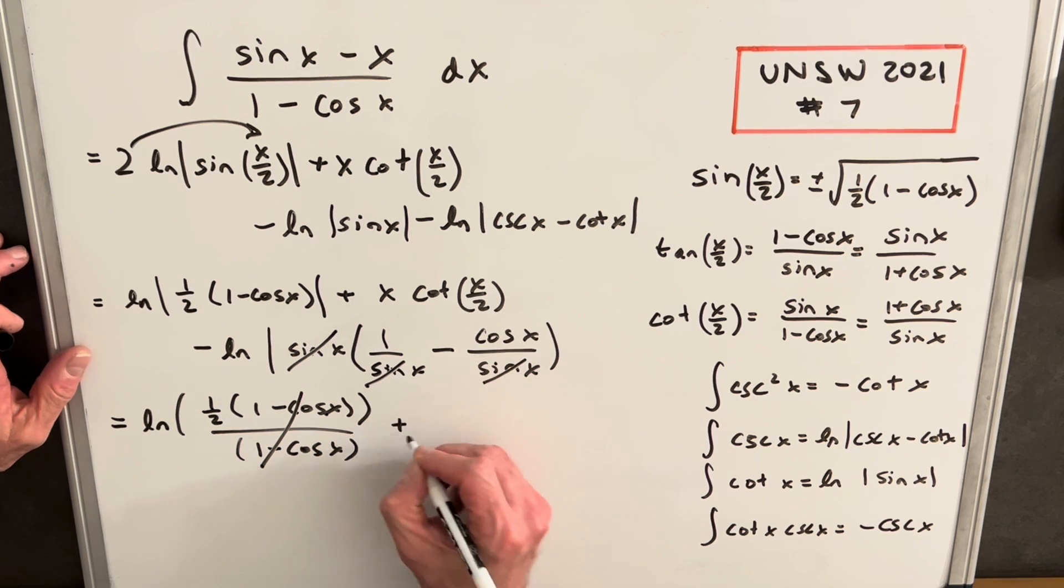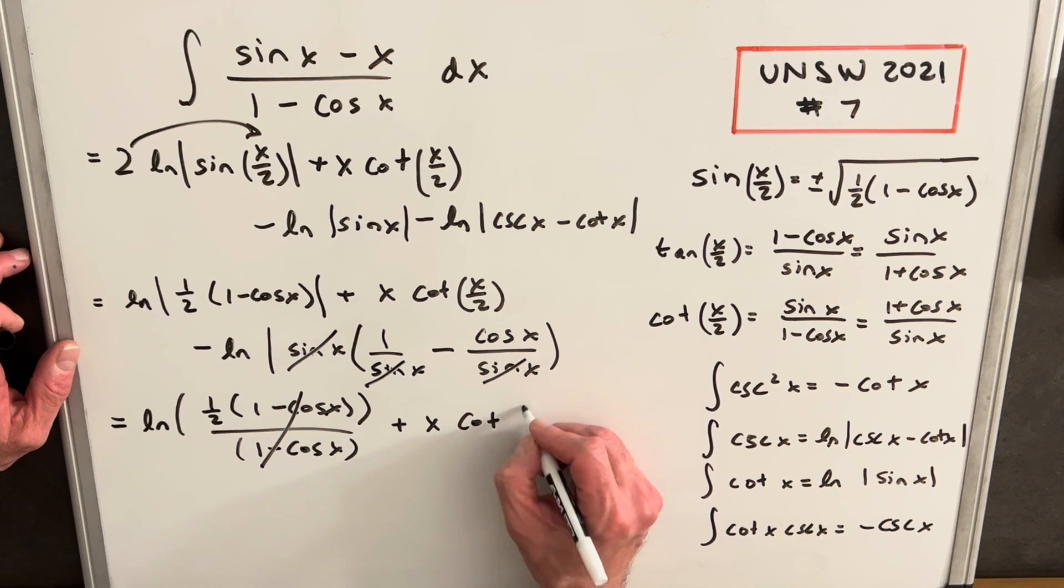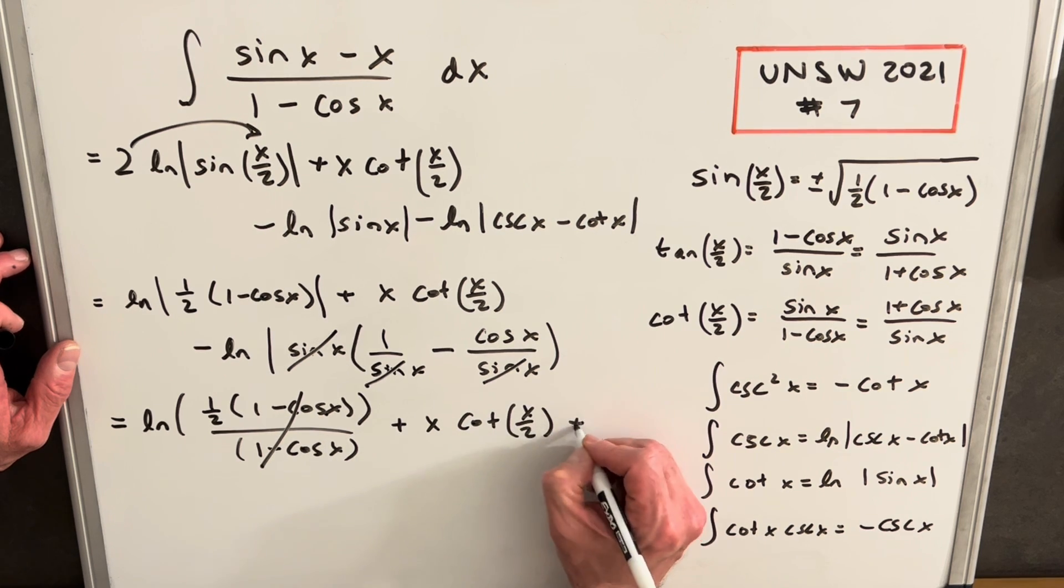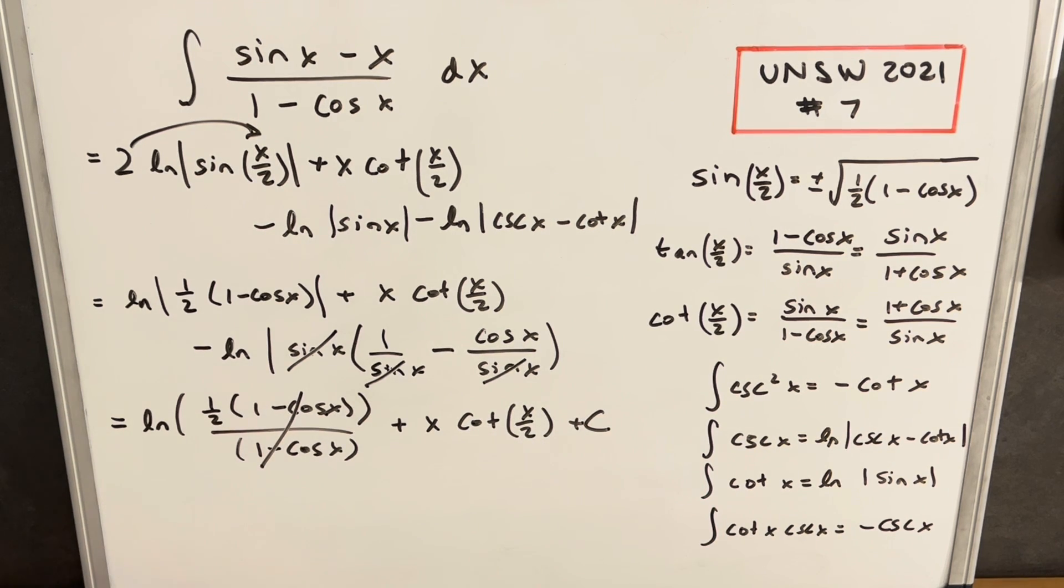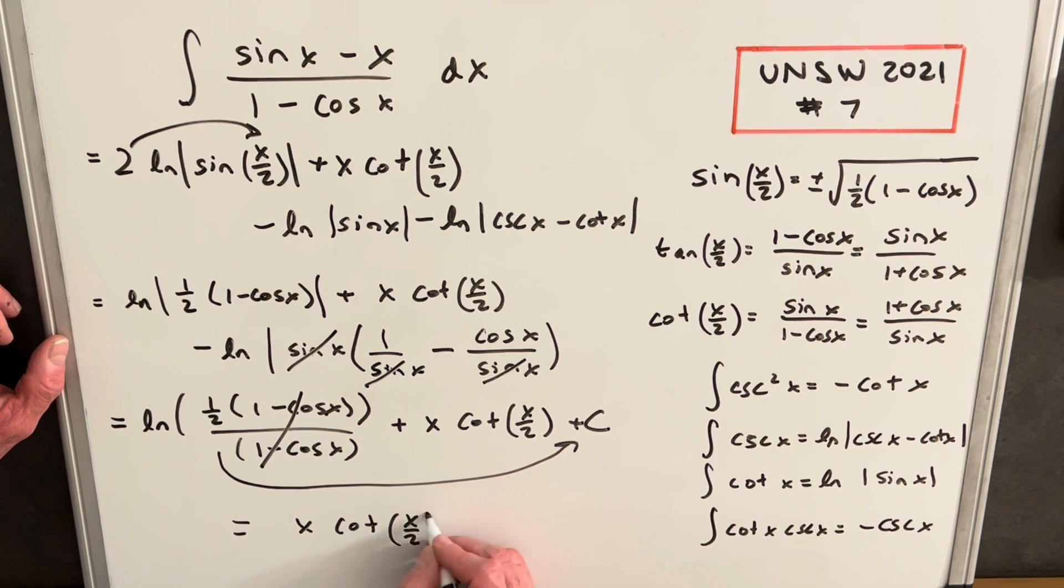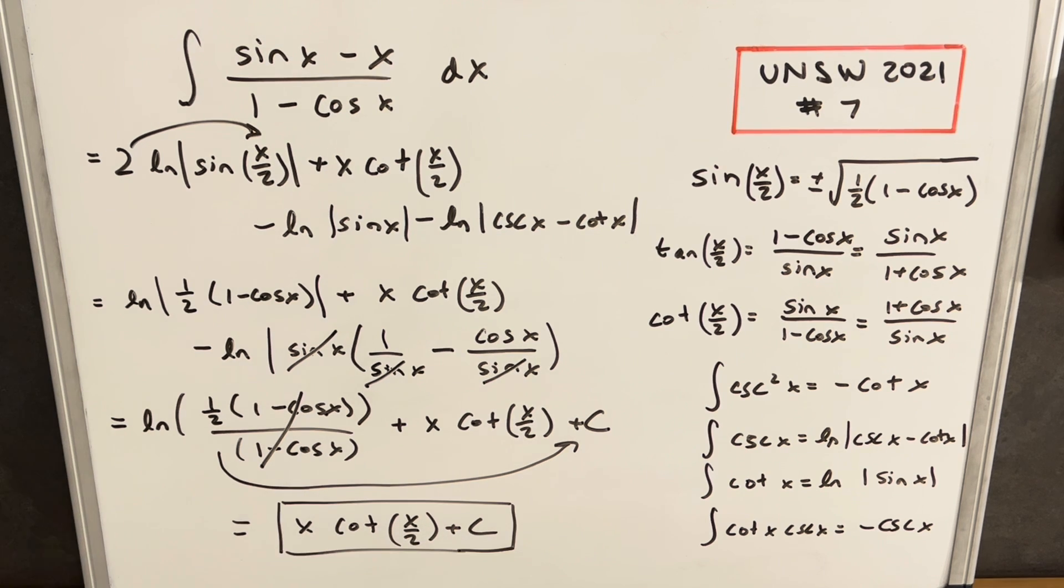We're going to have plus x cotangent x over 2 plus c. Then one final step: we can take ln of a half, which is just a number. This can just be absorbed in the constant and ignored. So for our final answer, we're going to have x cotangent x over 2 plus c.